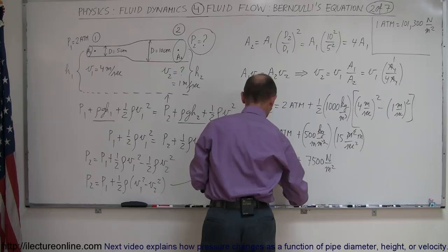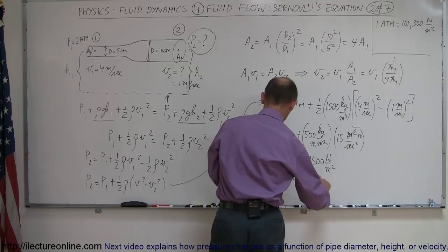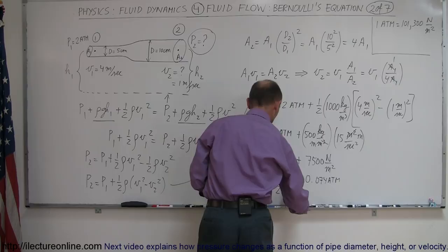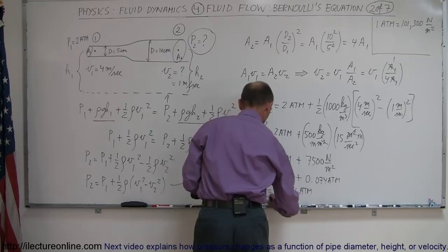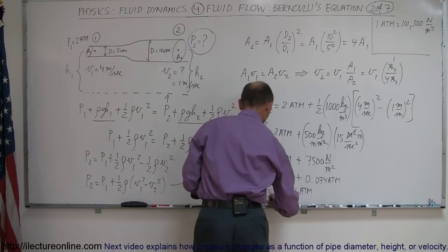And so we get this is equal to 2 atmospheres plus 0.074 atmospheres. And so the increase in pressure would be 2.074 atmospheres. That would be the pressure at point 2. A slight increase of atmospheric pressure due to the slowdown of the fluid in the wider section of the pipe. And that's how you work a problem like that.